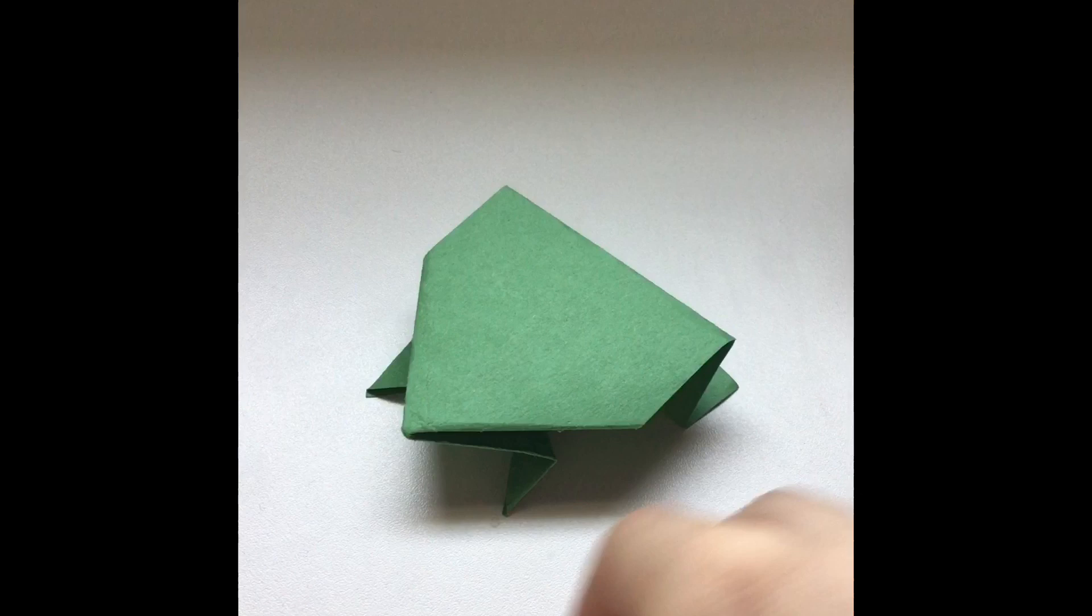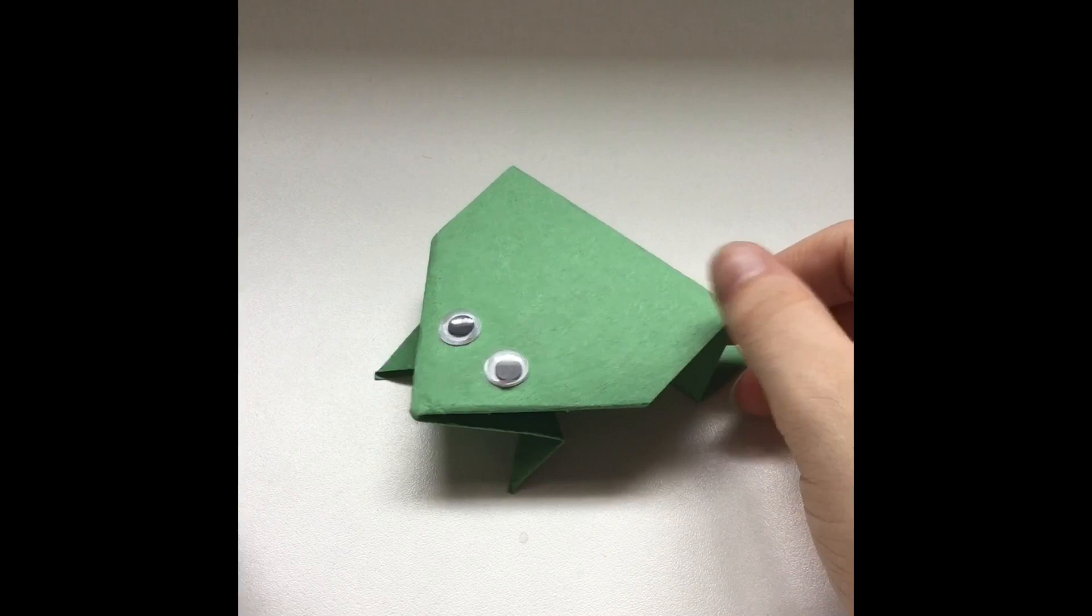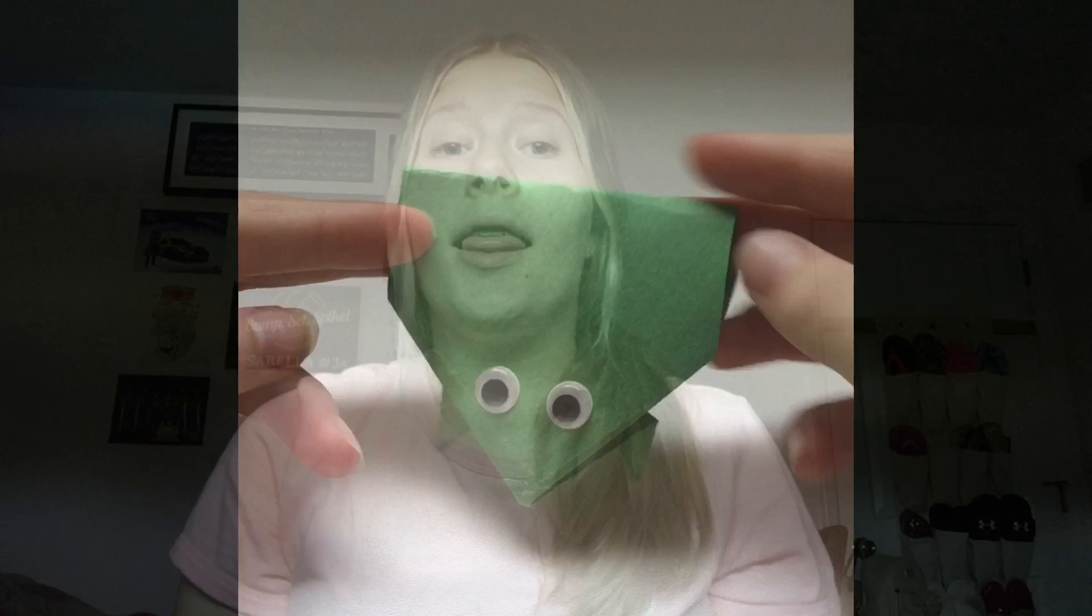And now the last and final step to your origami jumping frog is to take your googly eyes and your glue stick and just glue them on. And after you glue your googly eyes on your origami jumping frog should look like this. And here is the bottom just for a reference.